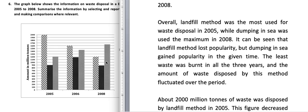The least waste was burnt in all three years. You can see this is the burning method — out of the total waste, this is the least in all three years. The amount of waste disposed by this method fluctuated: it was this much, then went up, then came down. This overview does not have any data — only trends and years. I have used words like 'the most used', 'the maximum', 'lost popularity', 'gained popularity', 'least waste', and 'fluctuated'. These words give trends and comparisons, so this is a good method of writing the overview.